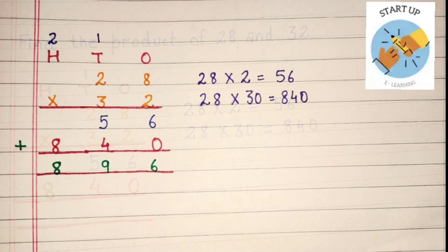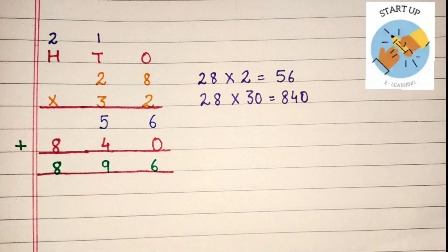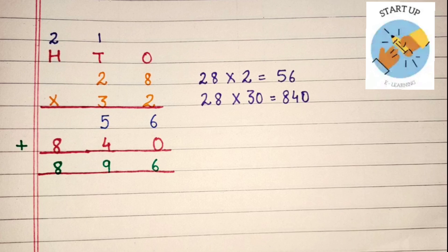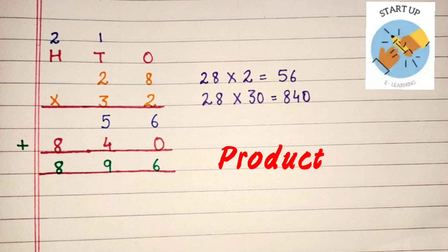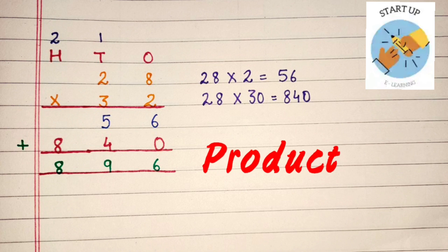Now, we will add these partial products to get the final product of 28 and 32. Let's start adding these partial products from 1's place. 6 plus 0 is equal to 6. 5 plus 4 is equal to 9. 8 plus nothing is equal to 8. So, 896 is the product of 28 and 32.